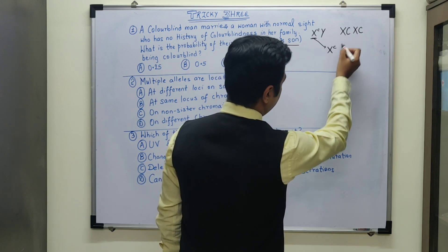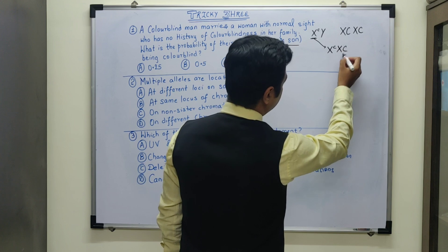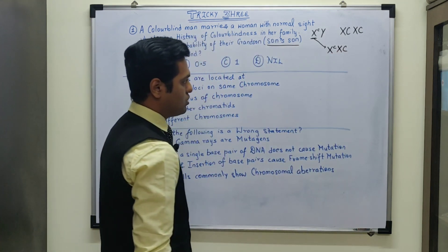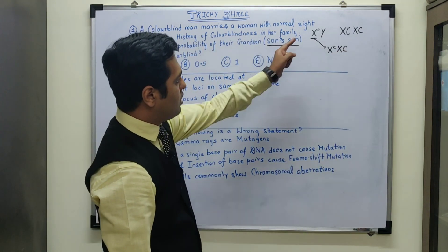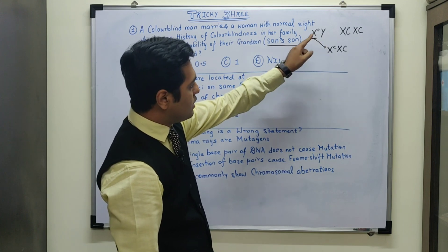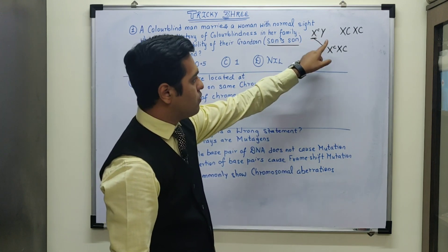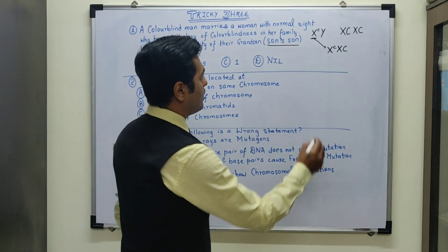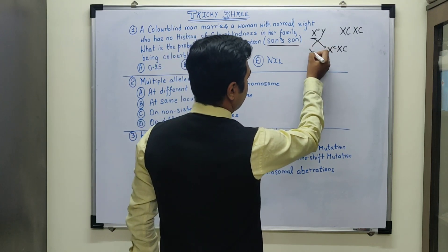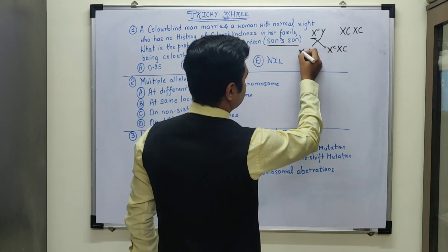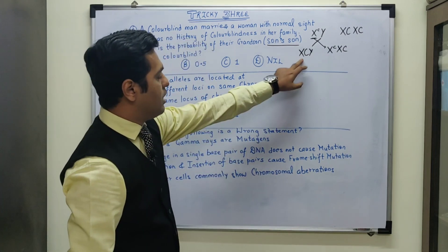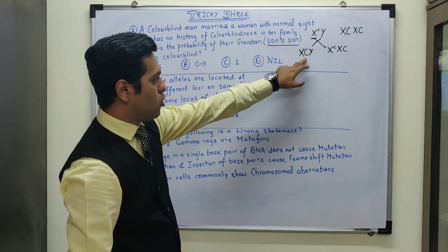And from this mother, there will be one dominant gene that will be received. So it will be X capital C and one X small c. So the chance of colorblindness being transmitted is to the daughter of this parent. But the son will receive the Y chromosome and X capital C chromosome from the mother. So son is definitely going to be normal.